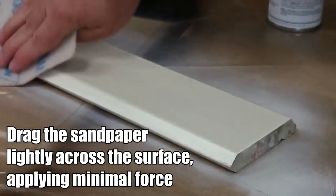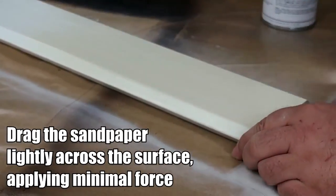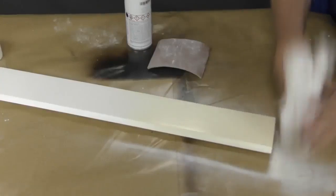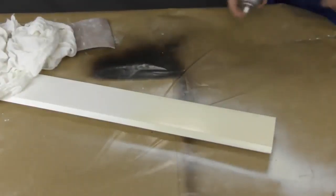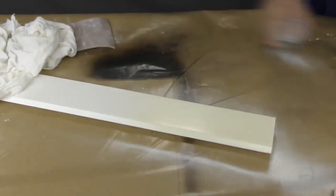Again, drag the sandpaper very gently across the surface. Wipe off any dust with a clean cloth and then apply the next coat just as you did the first one.